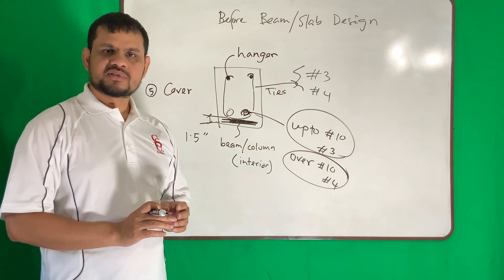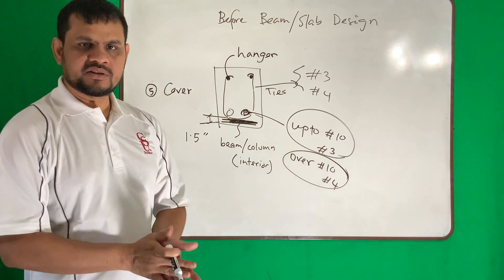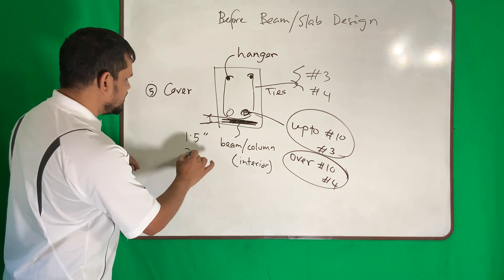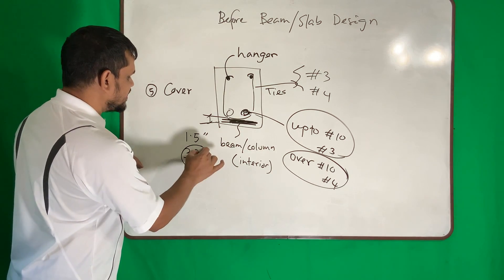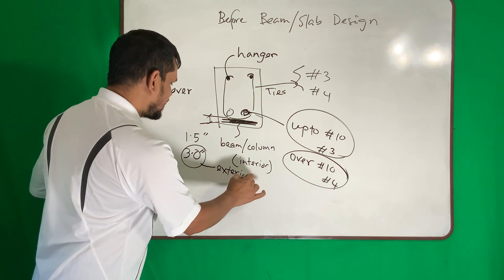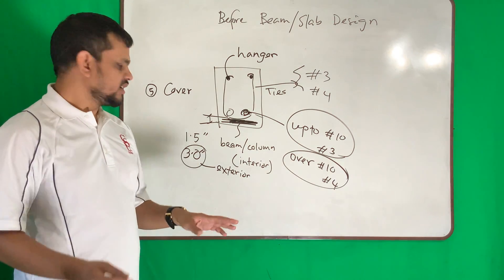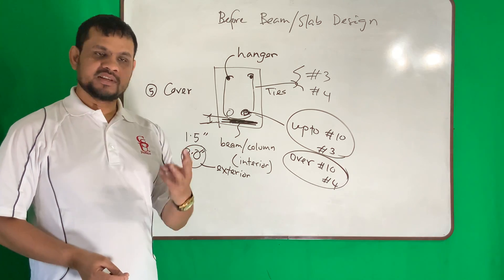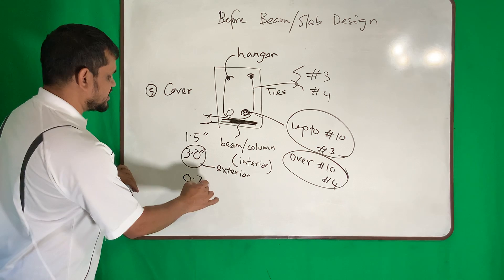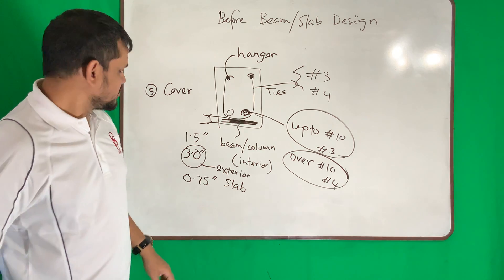If the concrete section is outside — for example in a foundation where soil water is present, or near the sea where water is close — we increase the cover to 3 inches. This applies to exterior beams, columns, and foundations.